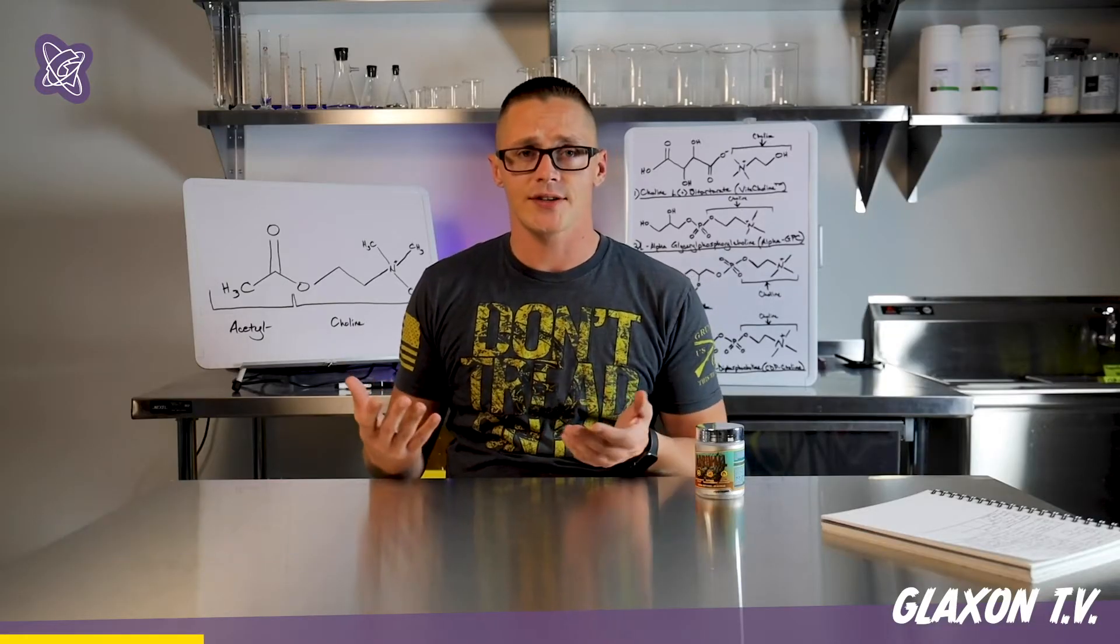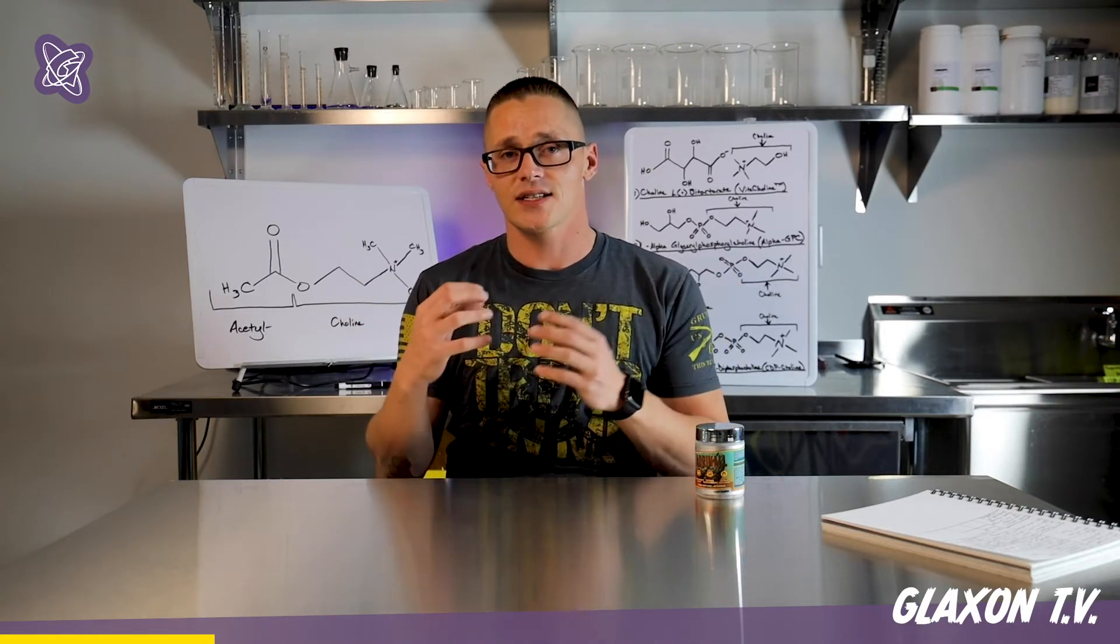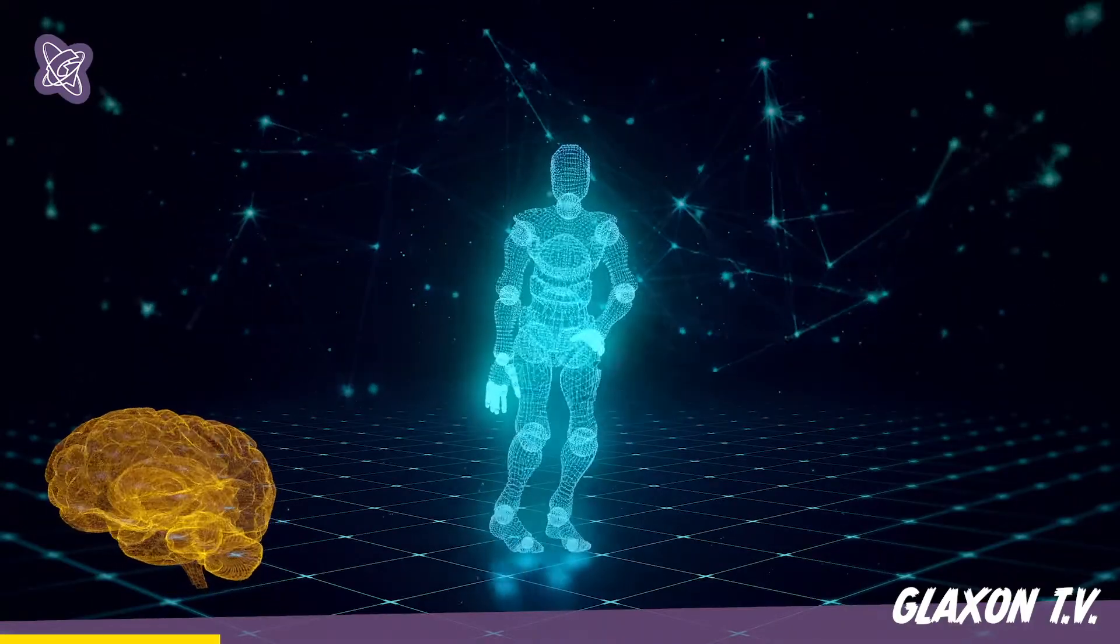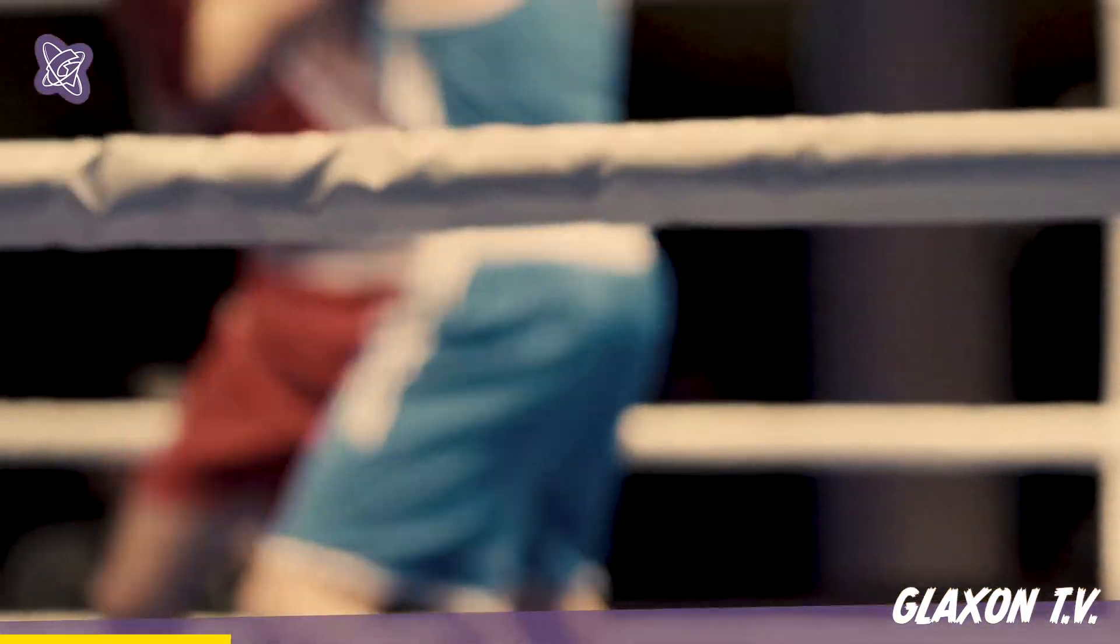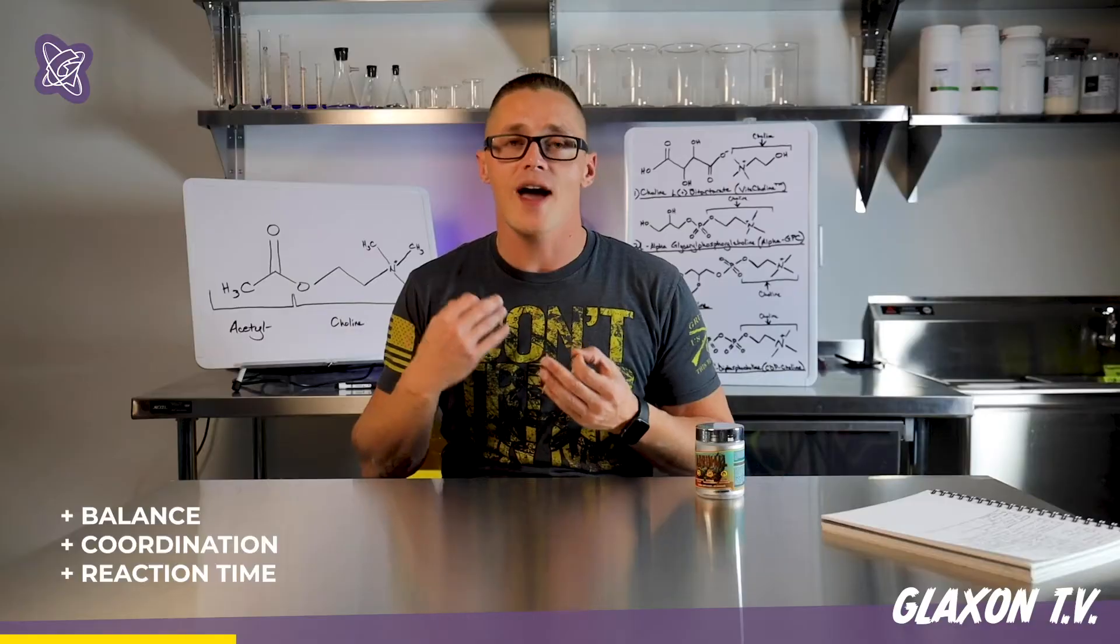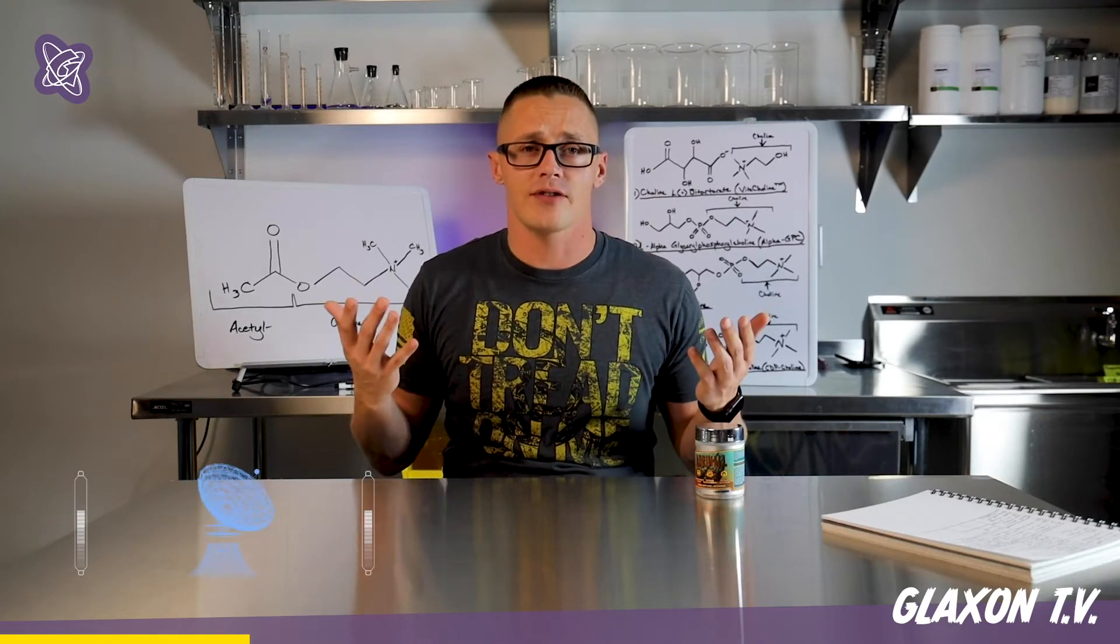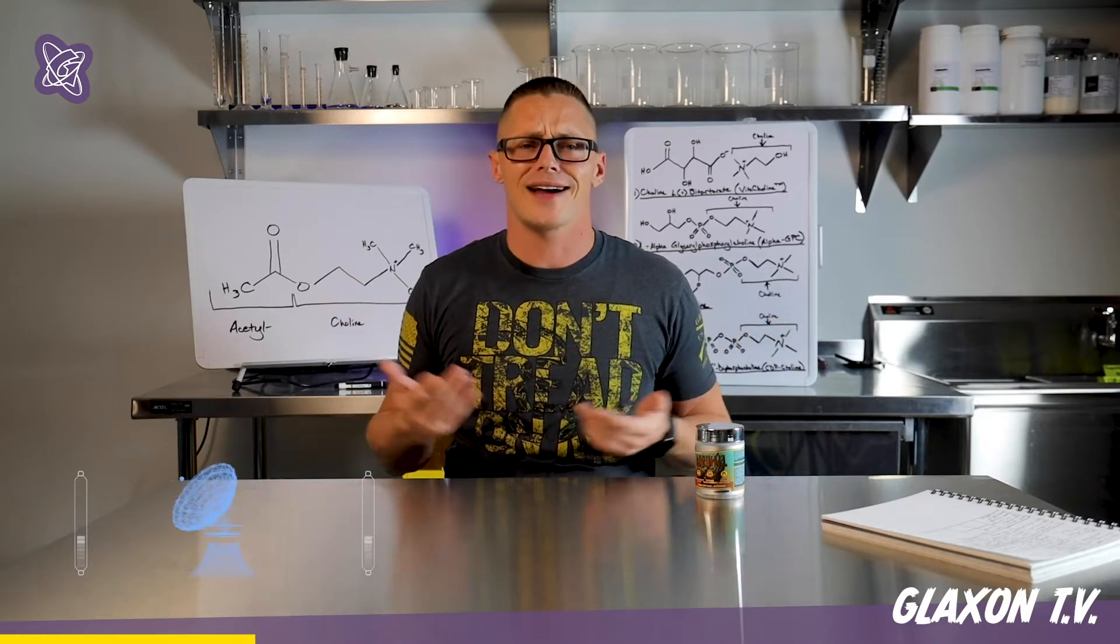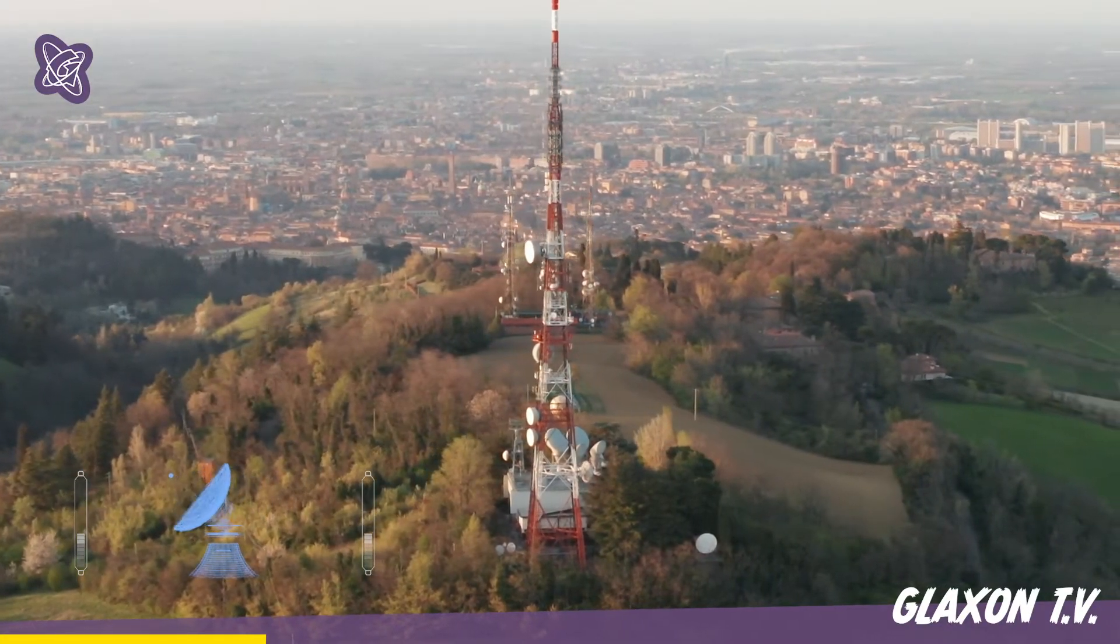You have receptors on your cells for acetylcholine. The acetylcholine comes into contact and this is the neuromuscular control going on. This relates to balance, coordination, and reaction time. As long as you have sufficient amounts of acetylcholine, it's like having great cell phone reception. You're in the middle of the city, it might as well be high-speed broadband communication going on between you and your environment.